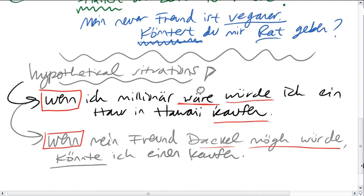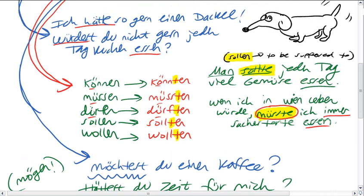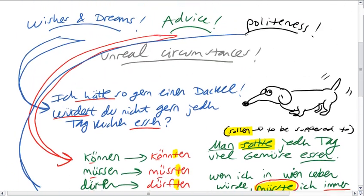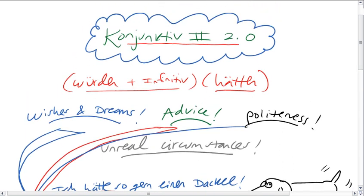So, in any event, we can use the Konjunktiv 2, for hypothetical situations, for politeness, for giving advice, and for wishes and dreams. And that's Konjunktiv 2, 2.0. Danke fürs Zusehen. Bis zum nächsten Mal. Tschüss.